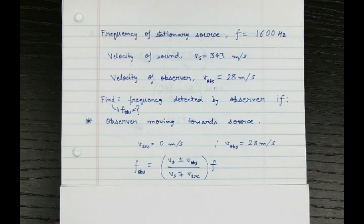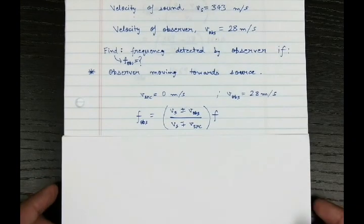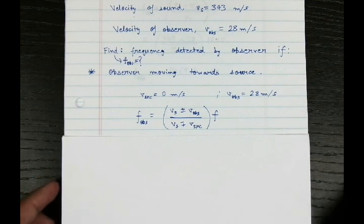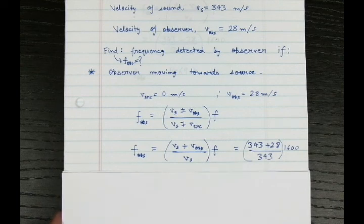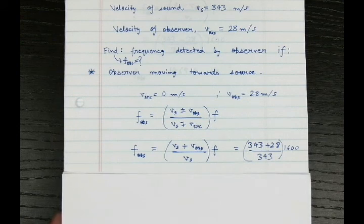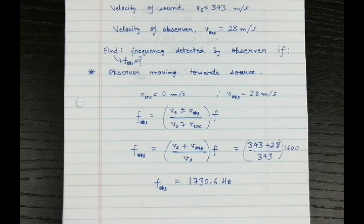Since the observer is moving towards the source — they are relatively moving toward each other — we take plus in the numerator and minus in the denominator. We get VS plus V-observer divided by VS, because the velocity of the source is zero. Plugging in the values, the final frequency detected by the observer is 1730.6 hertz, which is greater than the actual frequency when both source and observer are at zero velocity.